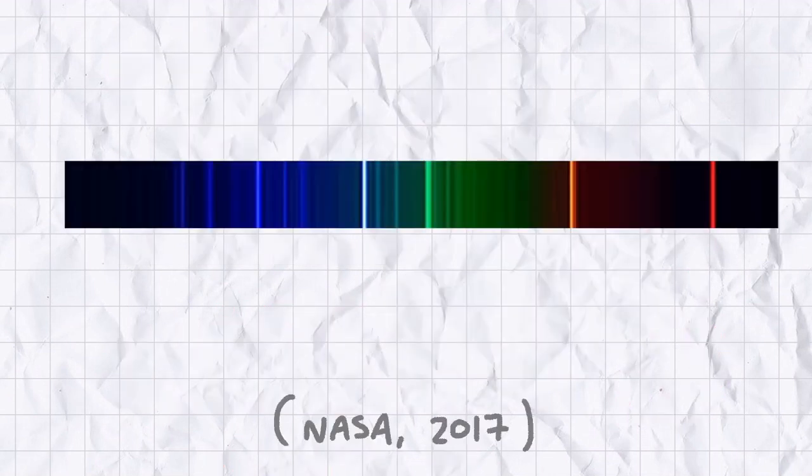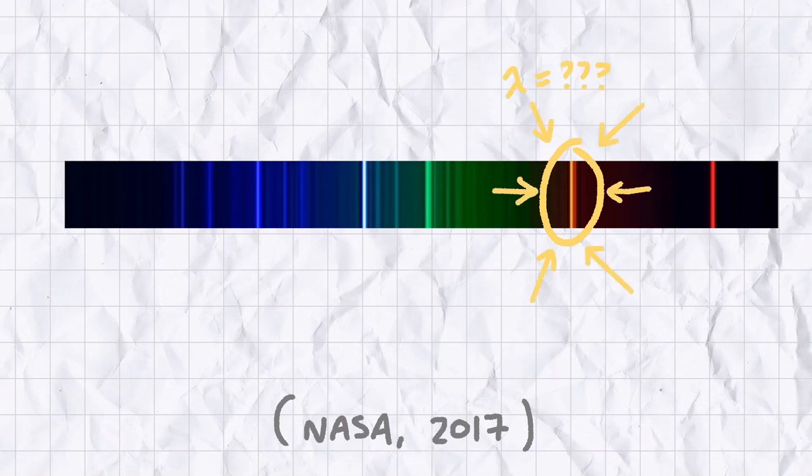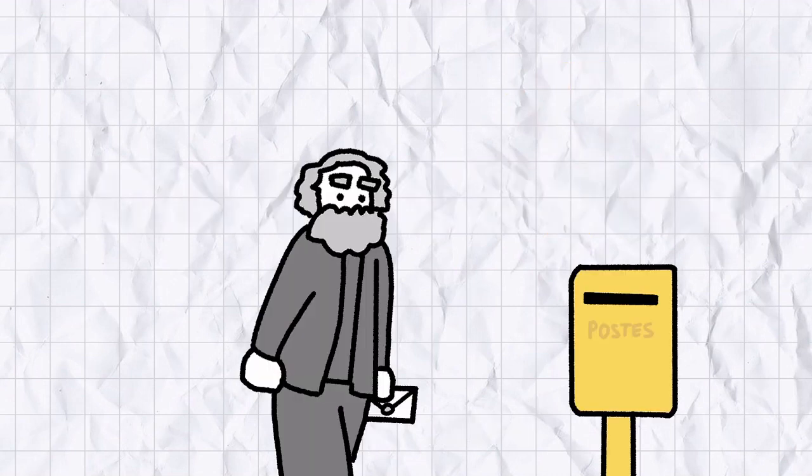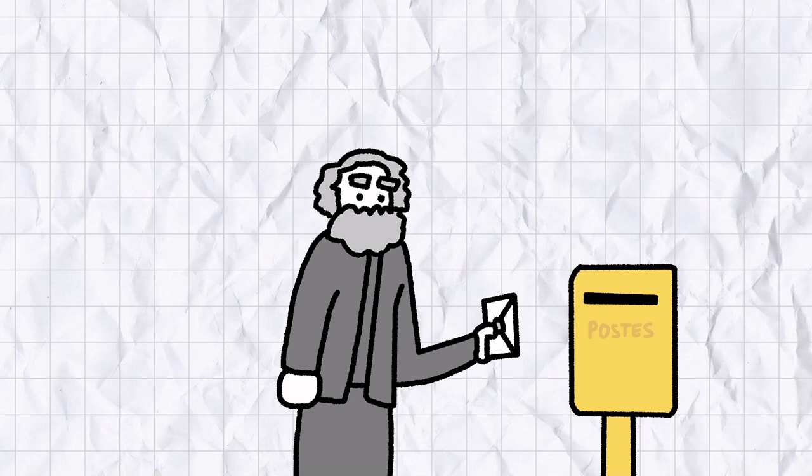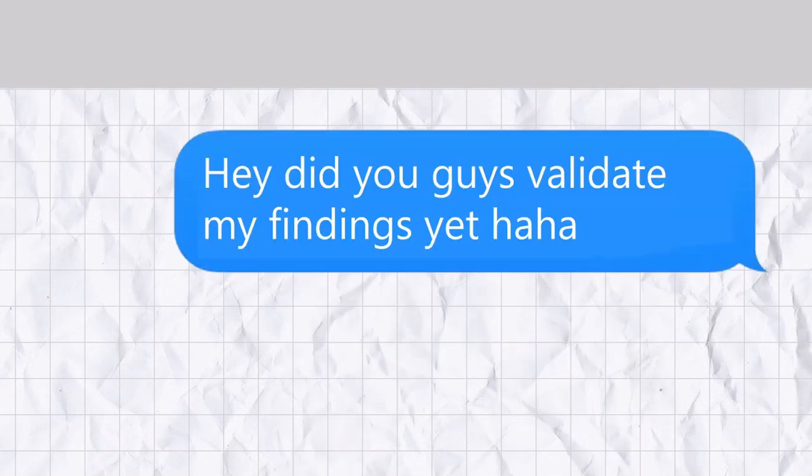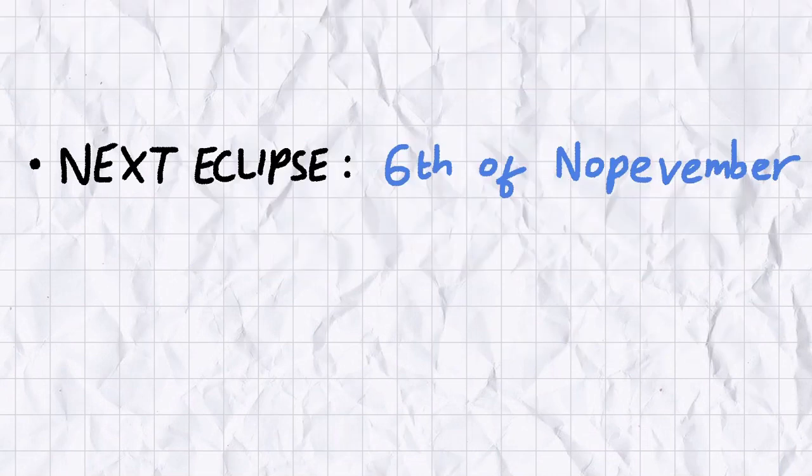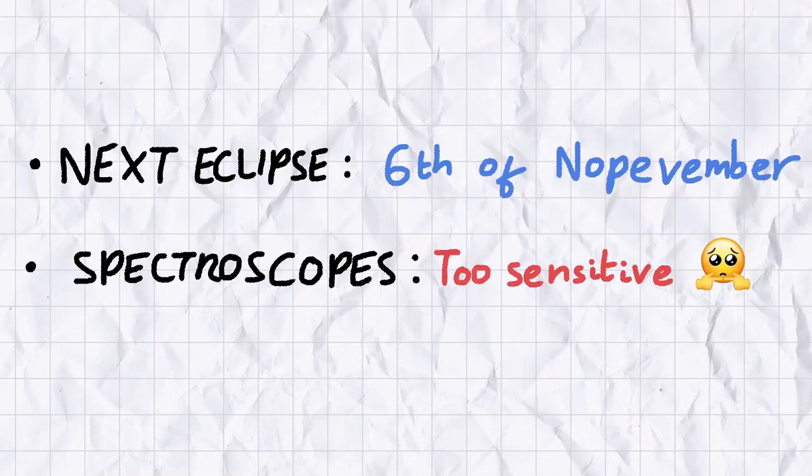But what Jansen saw must have puzzled him. In amongst the other spectral lines was a vivid yellow streak with a wavelength that didn't correspond to any of the data in his reference books. Jansen knew the line was too intense to be a faulty reading, so he sent his findings off to the French Academy of Sciences for analysis. Unfortunately, no one was in a position to validate Jansen's findings. There wouldn't be another eclipse for another 12 months, and the spectroscopes of the time were far too sensitive to use on a normal day.